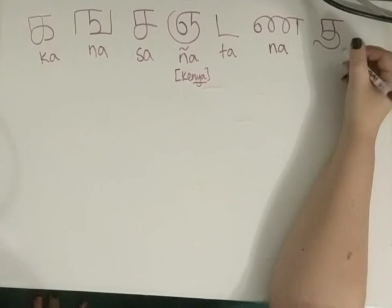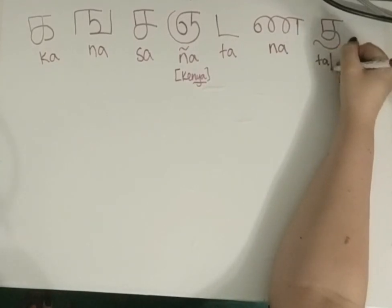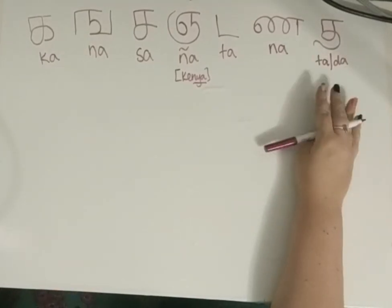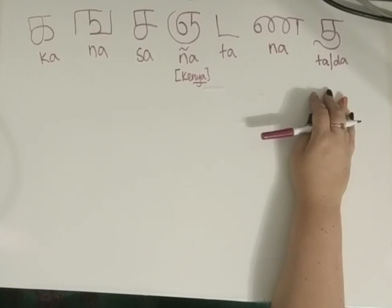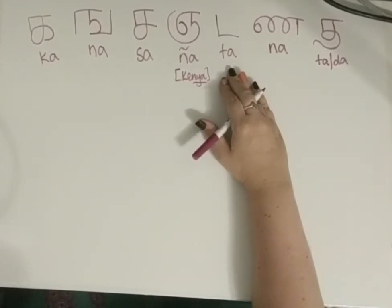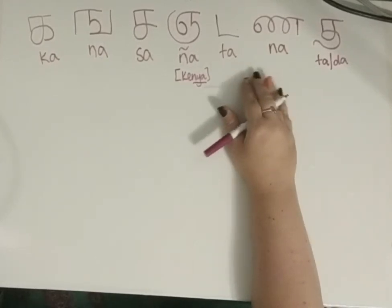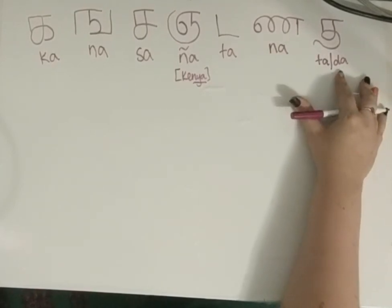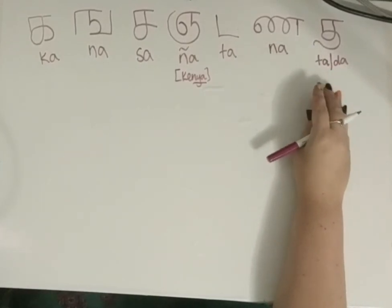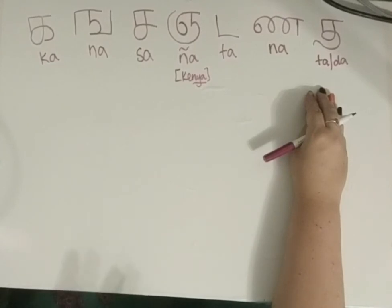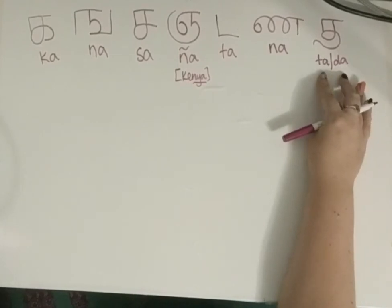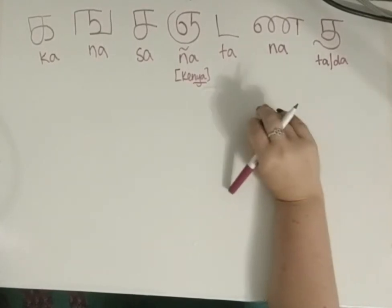This sound exists in other languages — it's a retroflex Ta. Think of it this way: put your tongue on the top of your mouth and say Ta at the same time. It sounds like you're saying Ta but you're really saying a retroflex Ta. Try it — put your tongue on the top of your mouth and say Ta. Not exactly Ta, not exactly Da, somewhere in between. That's the sound you should be making for this letter.